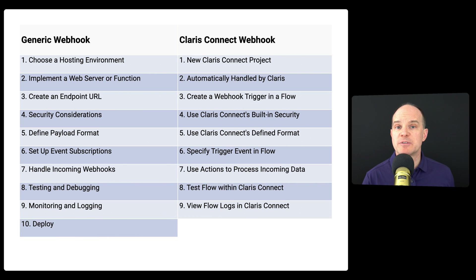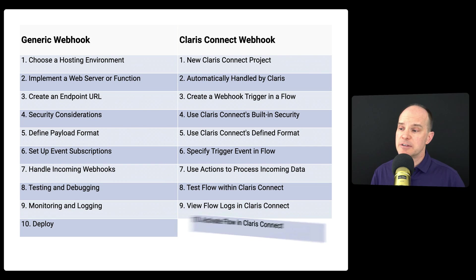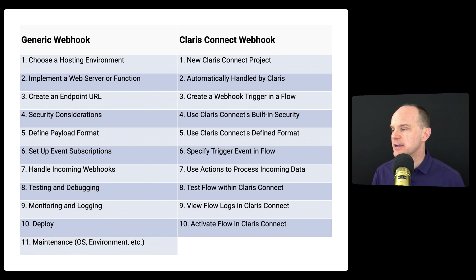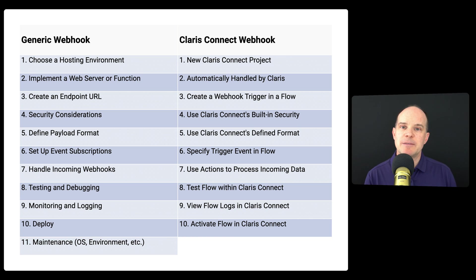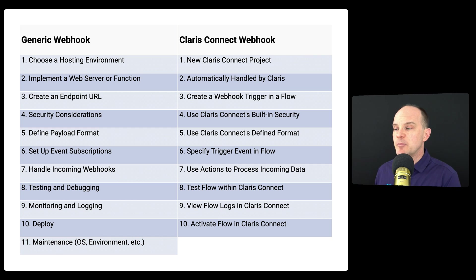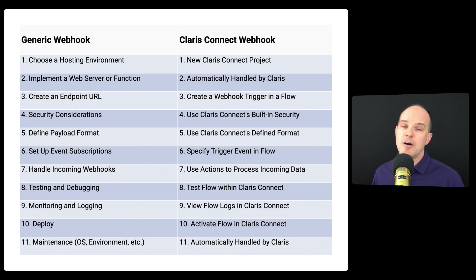Next, there's Deploy — setting up your web server to be production-ready to accept data from the internet. On Claris Connect, it's a simple toggle to activate your flow for production data. Then we have maintenance. For a traditional web server, this is extensive — you are responsible to keep the operating system up to date, all environmental variables, any custom logging system, and your PHP code used to interpret and parse incoming data. On Claris Connect, that is completely handled by Claris — they take care of all OS updates and any environmental updates behind the scenes.